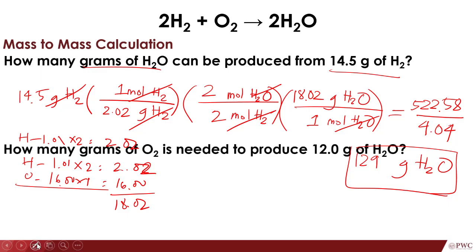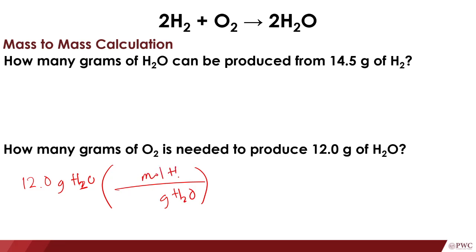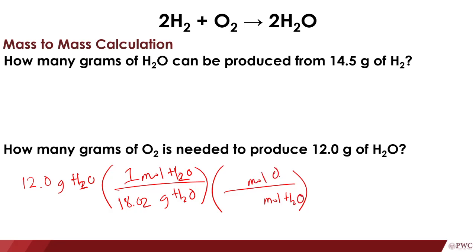Let's have another one: how many grams of O₂ is needed to produce 12 grams of H₂O? The given is 12 grams of H₂O. Convert this to moles first — from grams of H₂O to moles of H₂O using the molar mass of 18.02, which we computed earlier. Then apply the molar ratio from moles of H₂O to moles of O₂: for H₂O the coefficient is 2, and for O₂ it is 1.